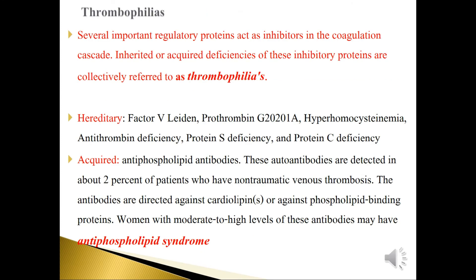Several important regulatory proteins act as inhibitors in the coagulation cascade. Inherited or acquired deficiencies of these inhibitory proteins are collectively referred to as thrombophilias. Hereditary forms include Factor V Leiden, prothrombin mutation, hyperhomocysteinemia, antithrombin deficiency, protein S deficiency, and protein C deficiency. Acquired forms include antiphospholipid antibodies.